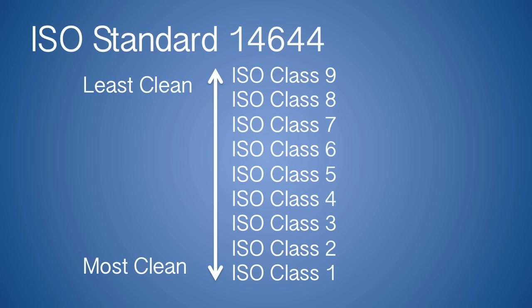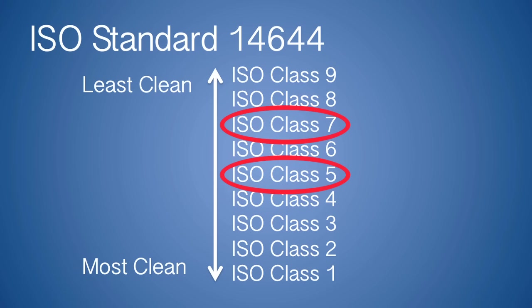This video primarily covers ISO class 7 and ISO class 5 clean rooms, as these are some of the most common classes of clean rooms used. ISO 5 clean rooms are much cleaner than ISO 7 clean rooms, and hence, more precautions must be taken to limit contamination.